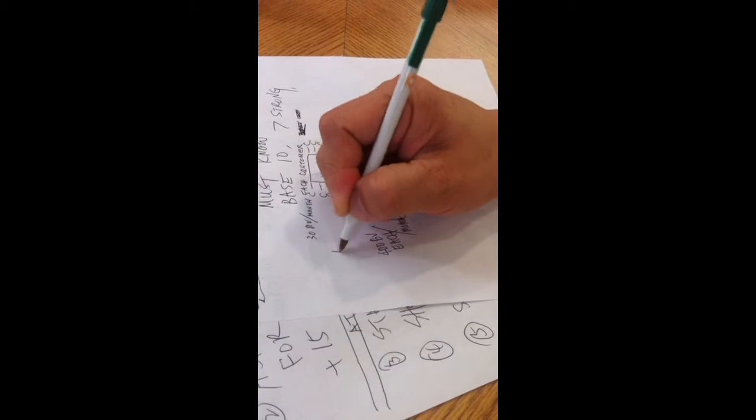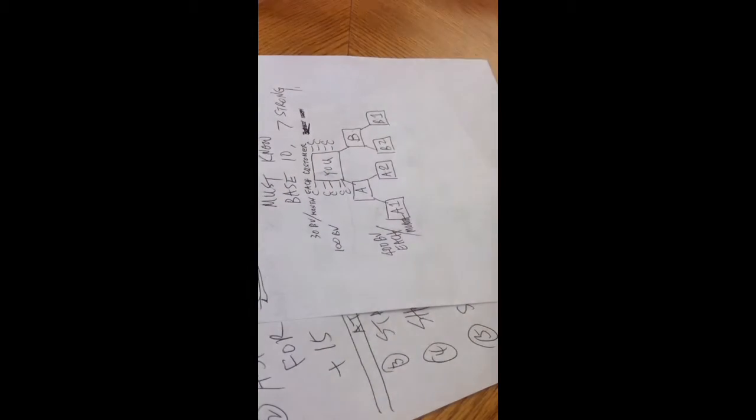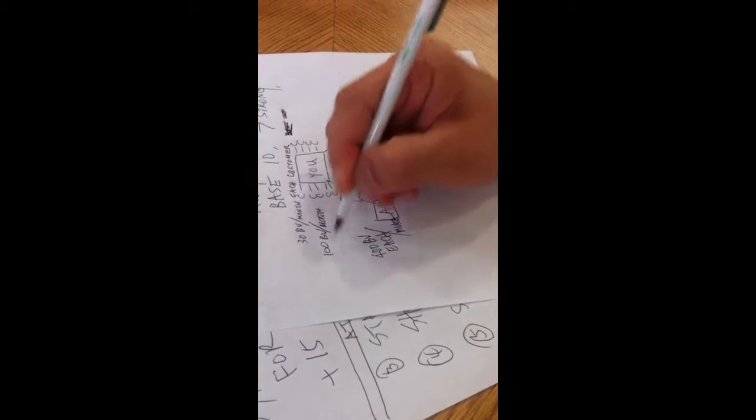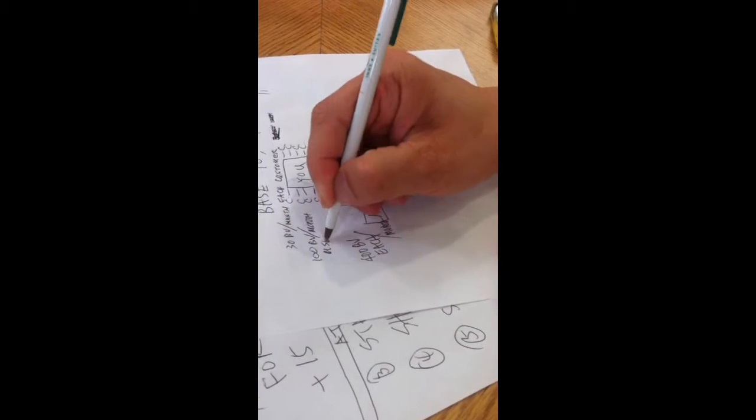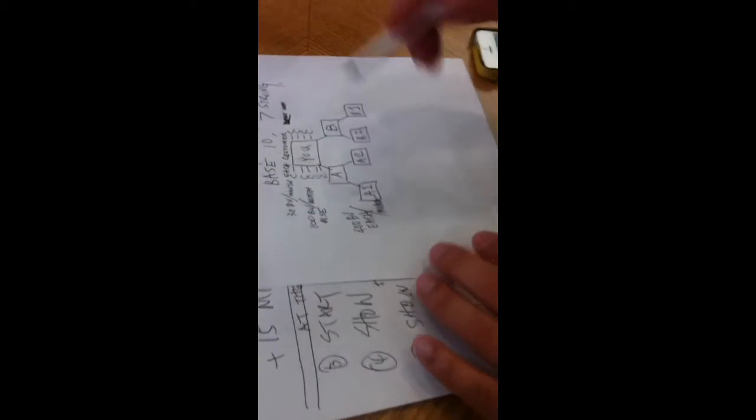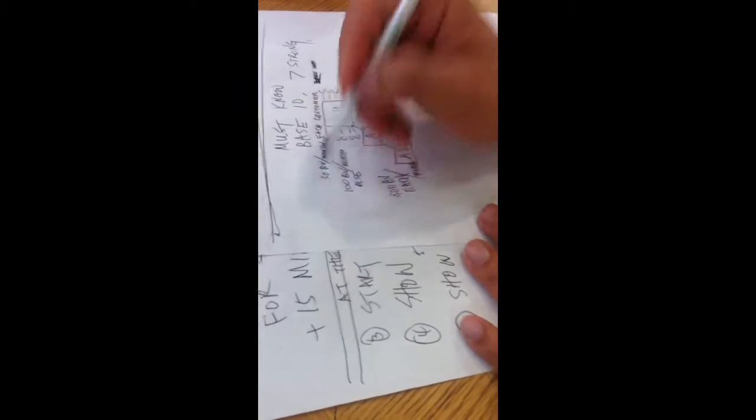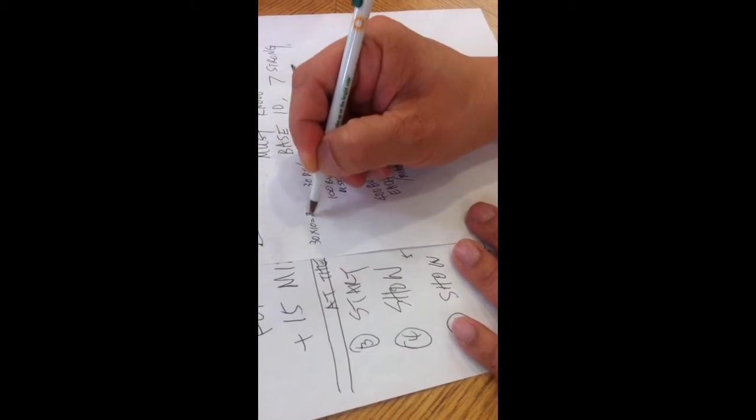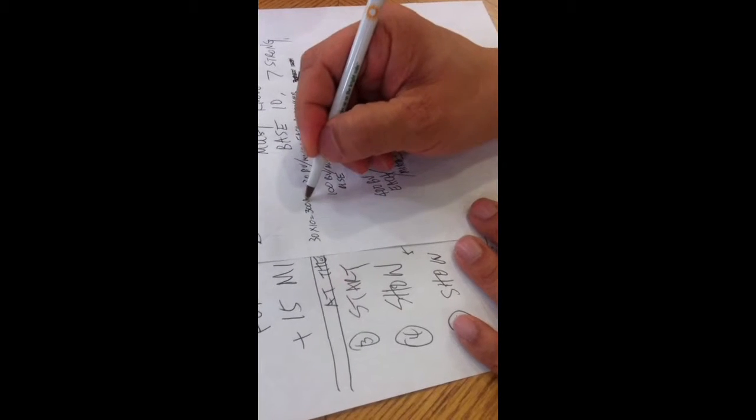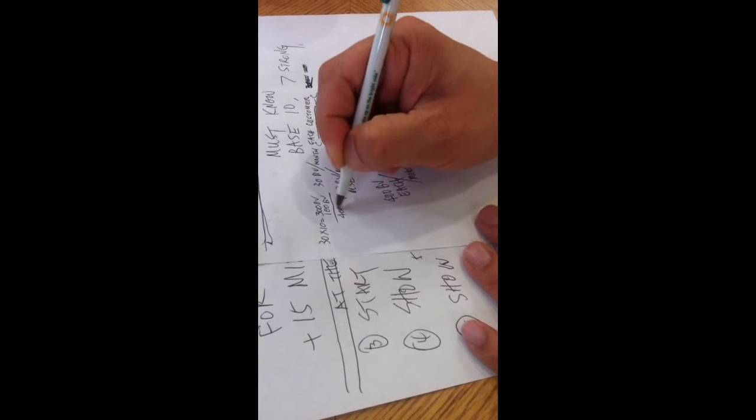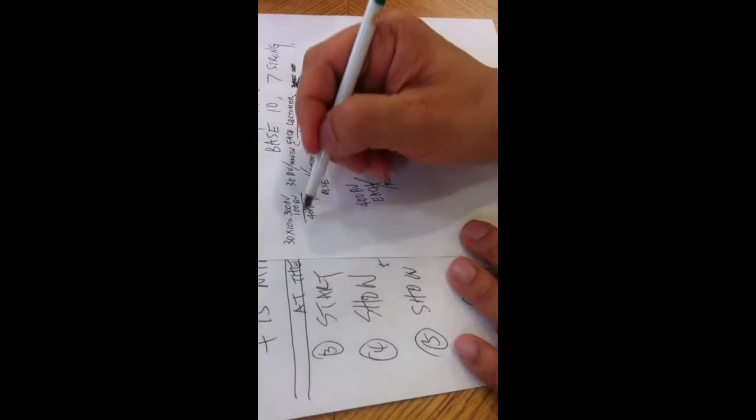And then you yourself buys 100 BB for your own use per month. So now you're creating 30 times 10 equals 300 from your customers BB, plus your 100 you use yourself, that's 400 BB. If you can create 400 BB...